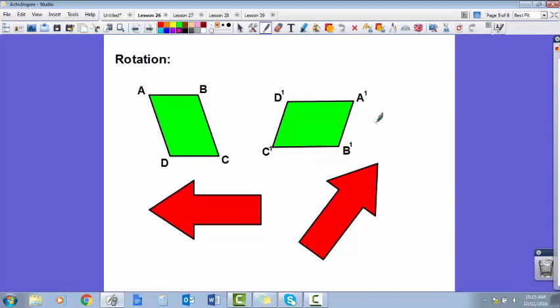Our next transformation is rotation. Rotation is just a turn. As you can see here, I have turned ABCD on its side to bring the A over here. This would be considered a 90 degree turn or a fourth.